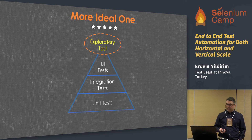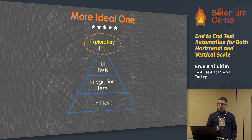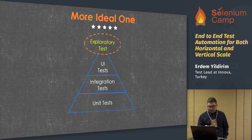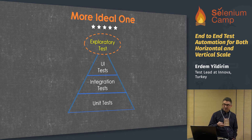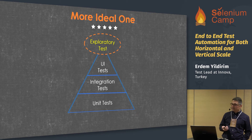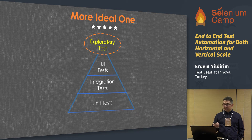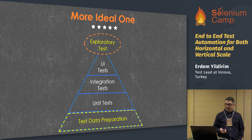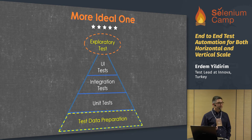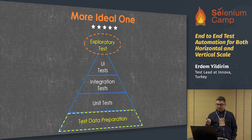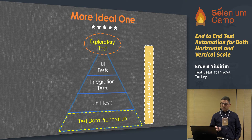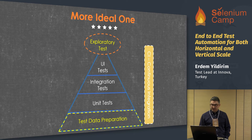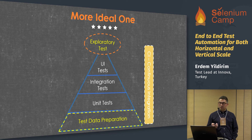We can replace manual tests with exploratory testing, which is an approach — not a technique — and more productive than scripted testing, and more traceable than ad hoc testing. We can add one more layer to the bottom: a test data preparation automation layer. We can also add continuous integration so that we can execute test automation projects automatically.